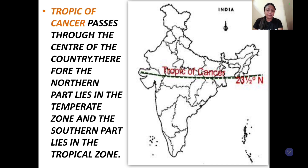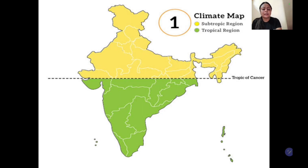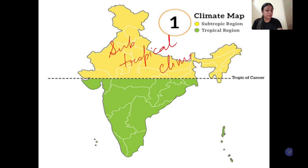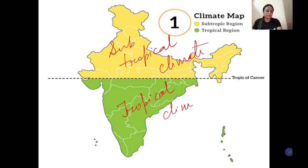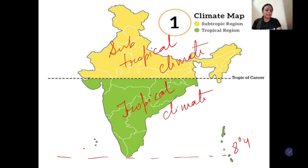Jaisa ke hamne kaha, Tropic of Cancer is passing through the center. Toh India ko ye climatically divide kar deta hai, doh hisson mein baant deta hai. Or climatically divide hone ke baad, northern part of India lies in the sub-tropical zone — we can say it experiences sub-tropical climate. Or southern part of India, jo equator ki nazdik hai, woh tropical zone mein hai, so it experiences tropical climate. And the latitude passing from the southern part of India is 8 degree 4 minute north, which is very close to the equator.